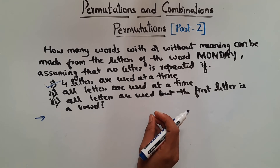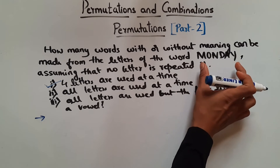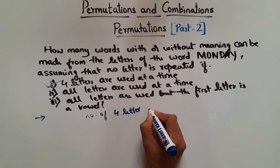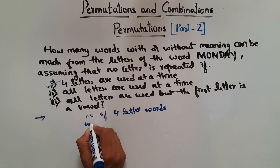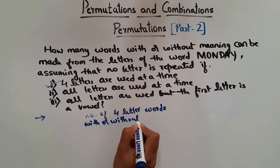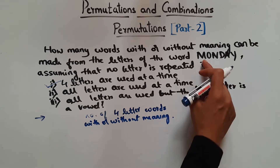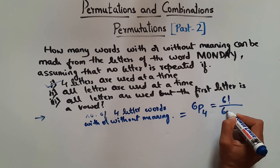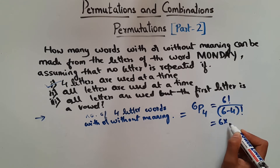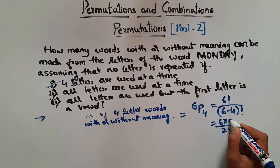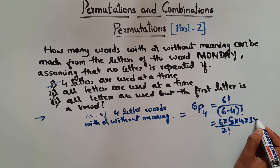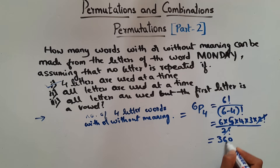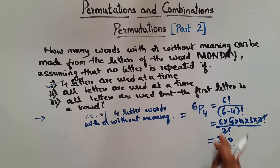So that will give you the total number of 4-letter words with or without meaning using the letters of the word MONDAY. So the number of 4-letter words is 6P4, which is nothing but 6 factorial by 6 minus 4 factorial. 6 minus 4 is 2, so 2 factorial. So 6×5×4×3×2 factorial — I can cut the 2 factorial. So 6×5×4×3 gives you 360. This means 360 four-letter words you can make out of the letters of the word MONDAY.